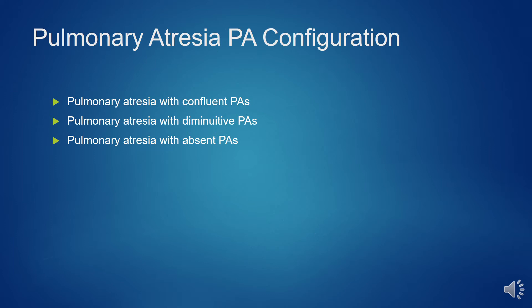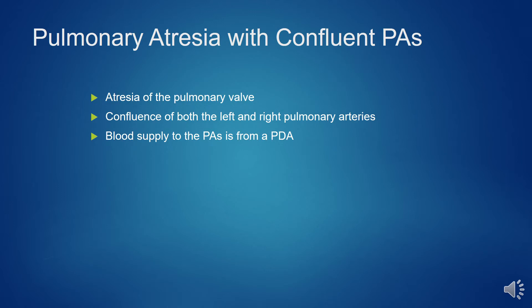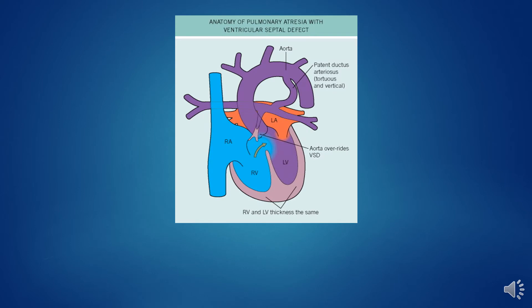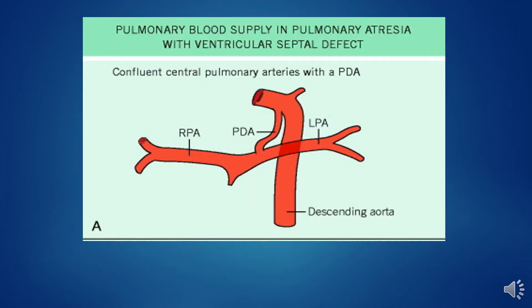Pulmonary atresia with PA configuration could be confluent PAs, diminutive, or absent PAs. Atresia with confluent PAs is atresia of the pulmonary valve with confluence of both left and right pulmonary arteries, and blood supply to the PA is from the PDA. This is the anatomy of pulmonary atresia with intact ventricular septum and with ventricular septal defect. This shows pulmonary blood supply in pulmonary atresia with ventricular septal defect, and the PDA is intact.